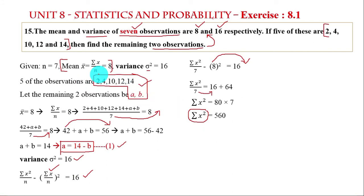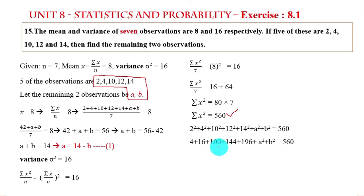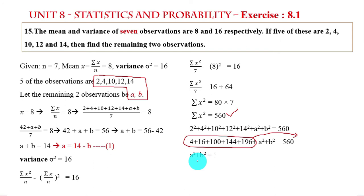Now squaring all known values: 2 squared plus 4 squared plus 10 squared plus 12 squared plus 14 squared plus a squared plus b squared equals 560. That is 4 plus 16 plus 100 plus 144 plus 196 plus a squared plus b squared equals 560. Adding: a squared plus b squared equals 560 minus 460 equals 100. This is equation number 2.